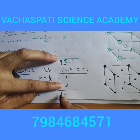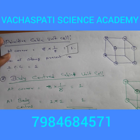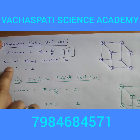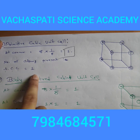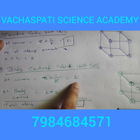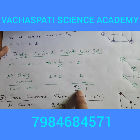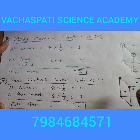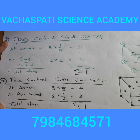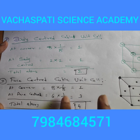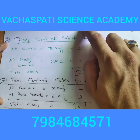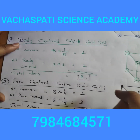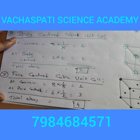In summary: in a simple cubic unit cell, 8 × 1/8 = 1 atom. In a body-centered cubic unit cell, 8 × 1/8 + 1 × 1 = 2 atoms. In a face-centered cubic unit cell, 8 × 1/8 + 6 × 1/2 = 1 + 3 = 4 atoms. Thank you.